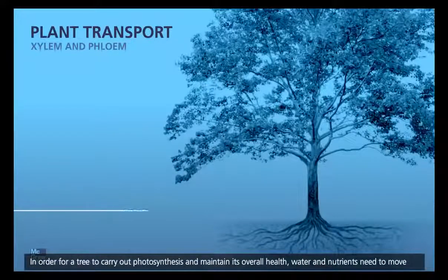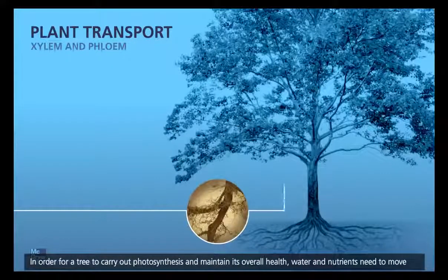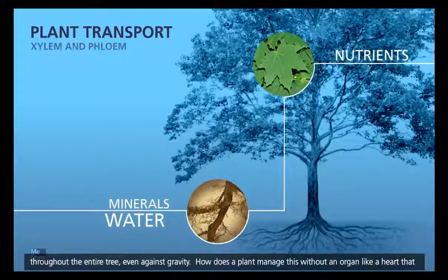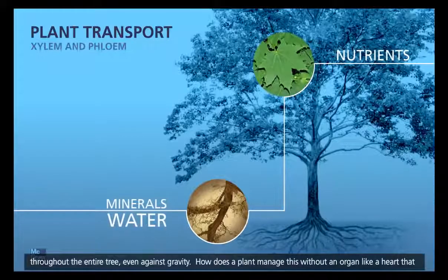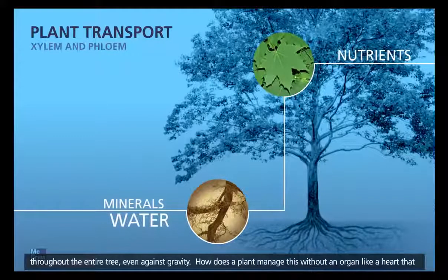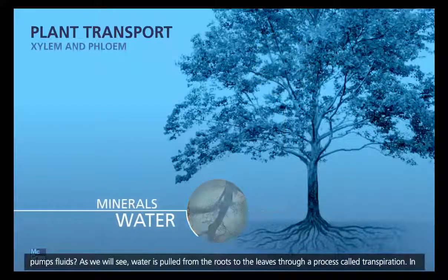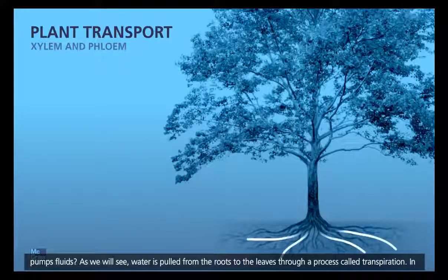In order for a tree to carry out photosynthesis and maintain its overall health, water and nutrients need to move throughout the entire tree, even against gravity. How does a plant manage this without an organ like a heart that pumps fluids? As we will see, water is pulled from the roots to the leaves through a process called transpiration.